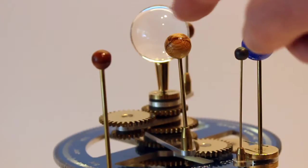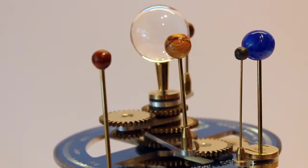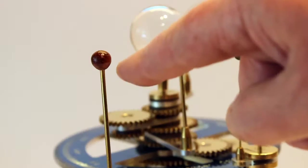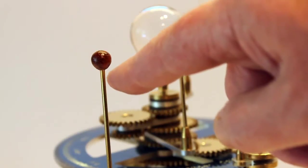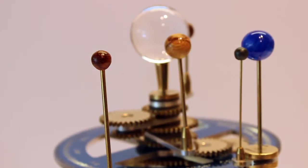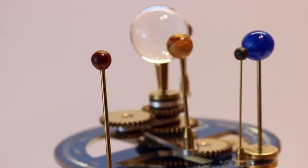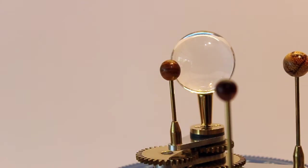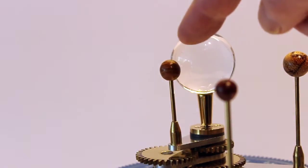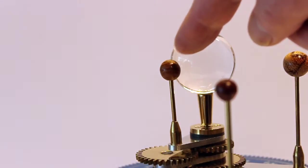Venus is made from marble wood. Mars is made from cocobolo. Mercury was made with hubba bali.